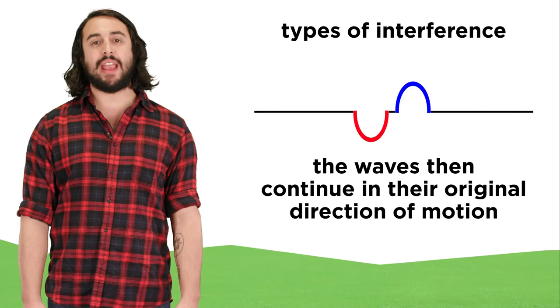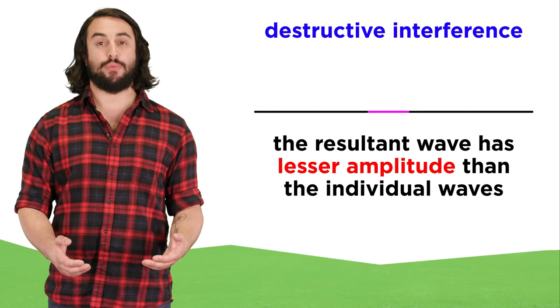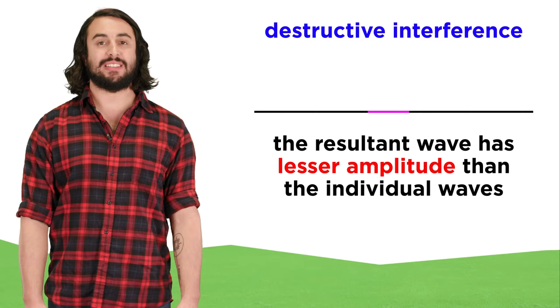This kind of interference, where the resultant wave has a smaller amplitude than the individual waves, is called destructive interference. And if the resultant wave has an amplitude of zero, like this example, it is called complete destructive interference.